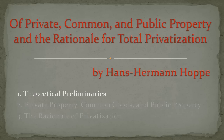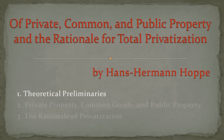Conflict only results if our different interests and beliefs are attached to and invested in one and the same good. In the land of abundance, with a superabundance of goods, no conflict can arise, except for conflicts regarding the use of our physical bodies. There is enough of everything to satisfy everyone's desires. In order for different interests and ideas to result in conflict, goods must be scarce. Only scarcity makes it possible that different interests and ideas can be attached to and invested in one and the same stock of goods. Conflicts, then, are physical clashes regarding the control of one and the same given stock of goods — people clash because they want to use the same goods in different, incompatible ways.